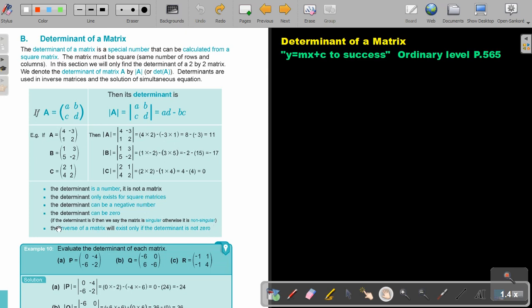So, very important. The inverse of a matrix will exist only if the determinant is not 0. So if it's 0, then you will not be able to find the inverse. I will show you in the next video how to find the inverse. Okay, let's look at an example.